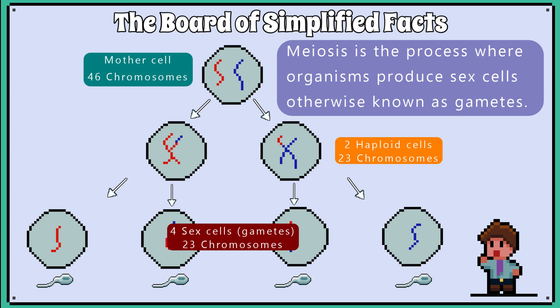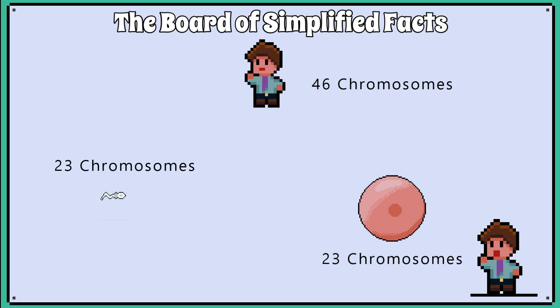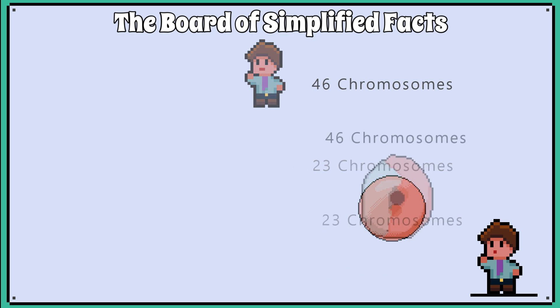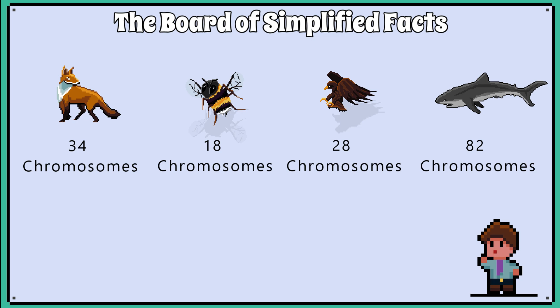Meiosis is the process where organisms produce sex cells, otherwise known as gametes. Sex cells must contain half the number of chromosomes. For example, humans have 46 chromosomes, and the sperm and egg cells have 23 chromosomes each, so when fertilisation occurs, they combine to make 46 again. Organisms need to have an even number of chromosomes if they are to sexually reproduce.